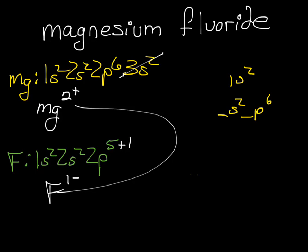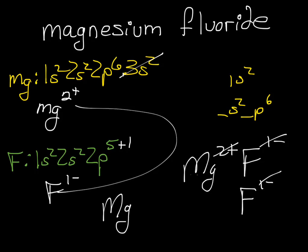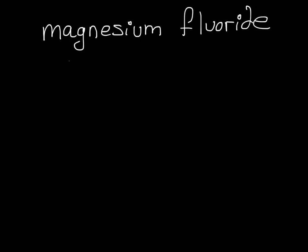So now we've got to put these two together. We have Mg2+, with F1-. Remember, they need to be neutral, so we have to have the same number of positive and negative charges. So we'll add another F. So now our charges are neutral, and the formula is MgF2.